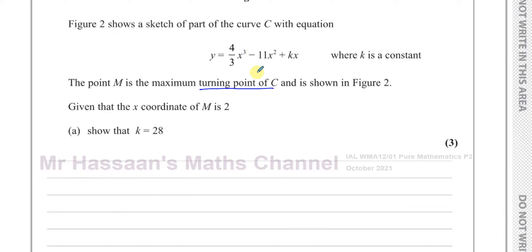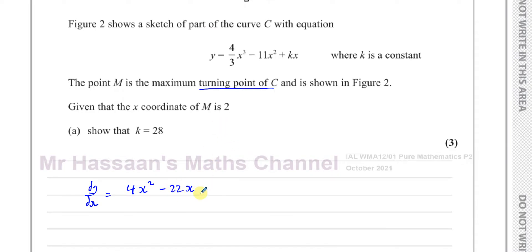For dy/dx, everything is ready to differentiate — all the x terms are on the numerator. Multiply by the power and reduce the power by one: 3 × (4/3) gives 4, so we get 4x². Then 2 × (-11) = -22x. And k × x gives k × x⁰, which is just plus k.